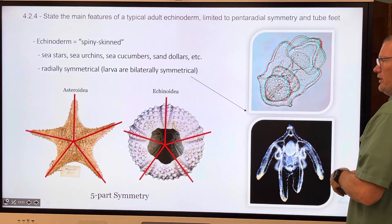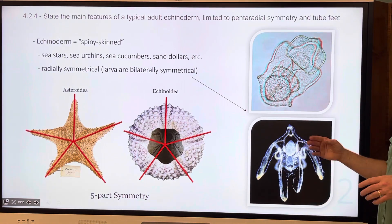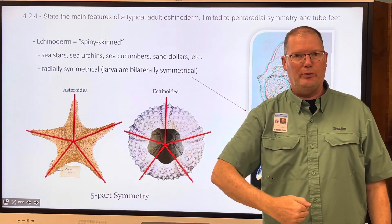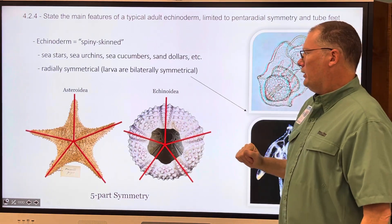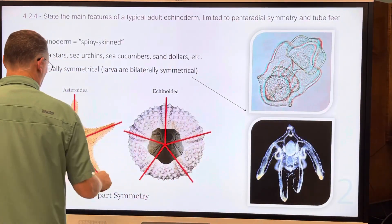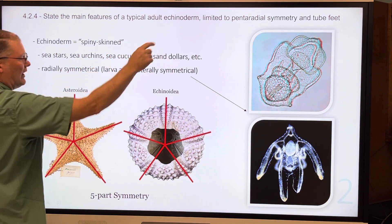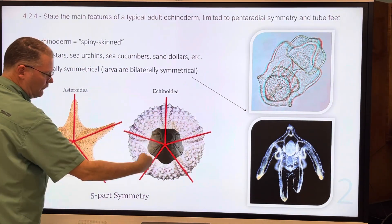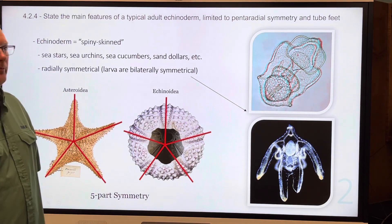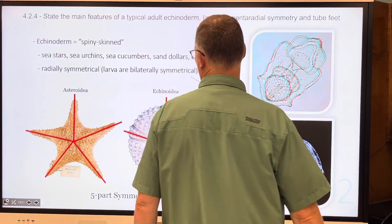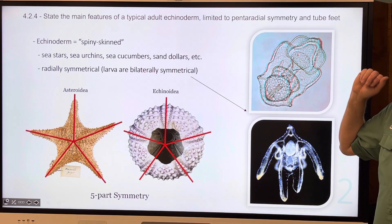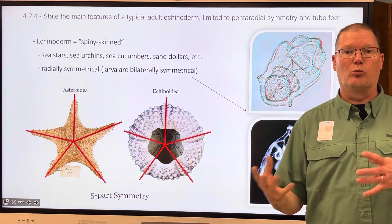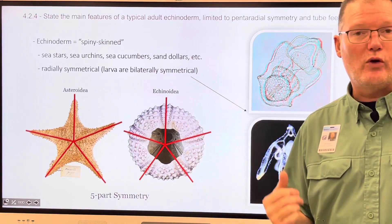They have radial symmetry, except for the larvae. The larvae are bilaterally symmetrical, like people are. Pentaradial means one, two, three, four, five — five sections. So they have a radial symmetry, and many of them are pentaradial. But some of them have multiple arms, more than five, and I'll show you some later.